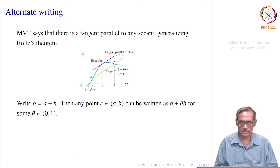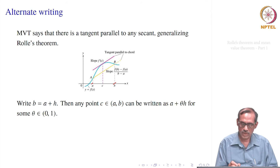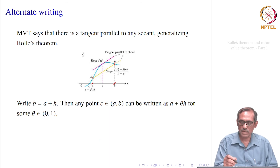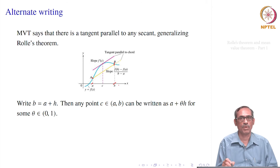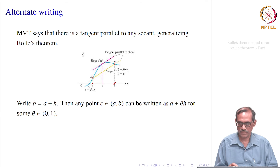Geometrically, the mean value theorem says: take the point A = (a, f(a)) and B = (b, f(b)). The slope of the secant AB is (f(b) − f(a)) / (b − a). The mean value theorem says there exists a point c inside (a, b) where f'(c) equals this slope — that is, the tangent at c is parallel to the secant. When f(a) = f(b), this slope is 0 and we recover Rolle's theorem directly.